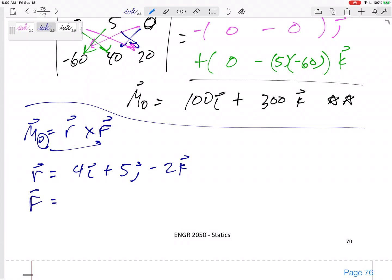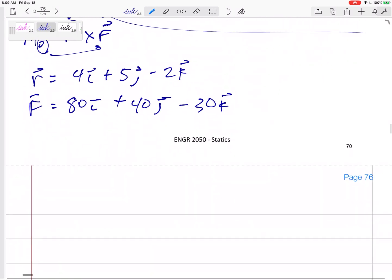And of course the force, I'll just rewrite it. 80i, 40j, minus 30k. So now I got that, got that, now I'm ready to do my cross product.